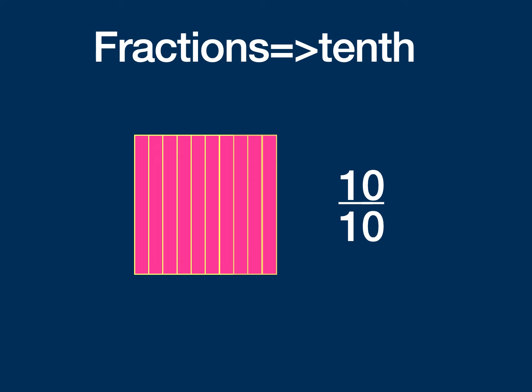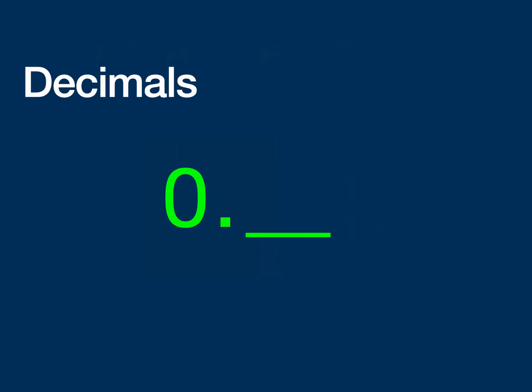So let's talk about decimals now and how those fractions we just talked about relate to decimals. If I'm writing a decimal and I don't have a whole number yet, I would say zero point something. And that something, that spot right to the right of the decimal is the tenth spot. So that's where the tenths number goes.